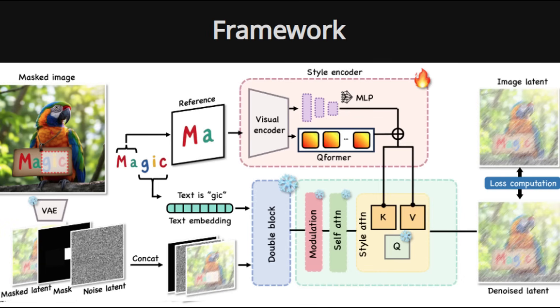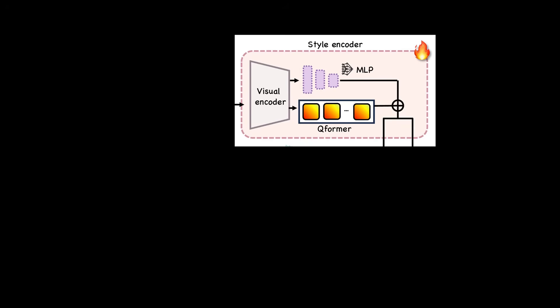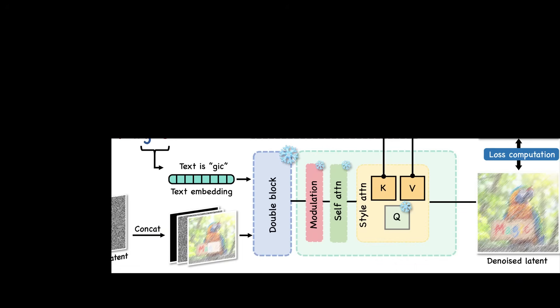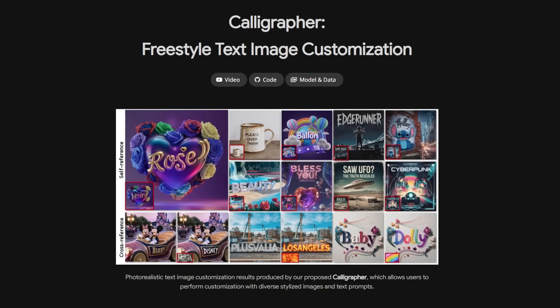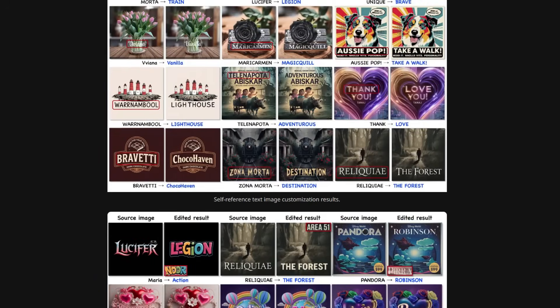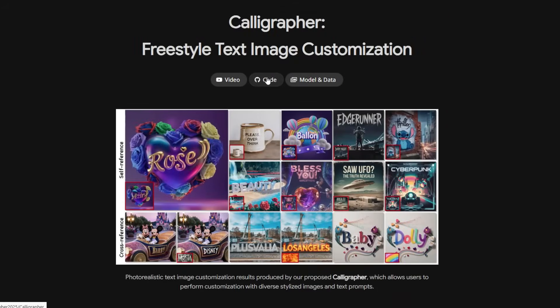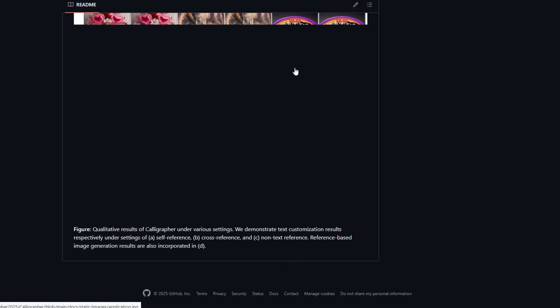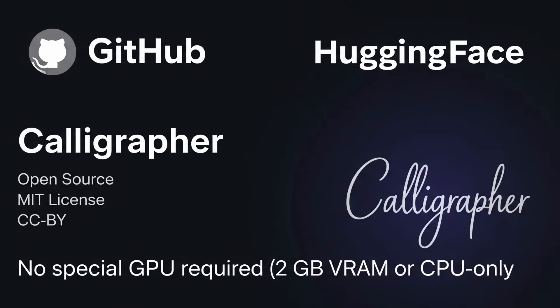So how does Calligrapher work its magic? There's a style encoder that takes a reference image and extracts the key style elements. Then in the main diffusion block, it takes your text prompt, converts it into an embedding, and uses that style information to guide the image generation process. This double block design lets the AI pay attention to both the text you want and the style you want it in, which is why the results are so accurate. Calligrapher is fully available right now — the creators have put the code on GitHub with a Hugging Face page. It's open source under the MIT license, and the pre-trained model weights on Hugging Face are under CC BY. You just need to clone the repository, install the requirements, and you're all set. No special GPU required — even a 2GB VRAM card or a CPU-only setup will do.